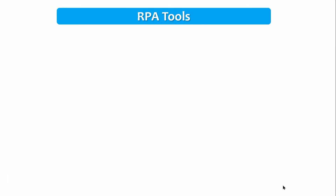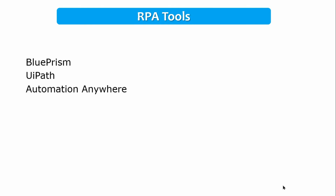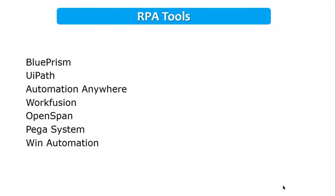Now we talk about RPA tools. There are few RPA tools available in the market. First we have Blue Prism, then UiPath, Automation Anywhere, Workfusion, OpenSpan, and PegaSystem.